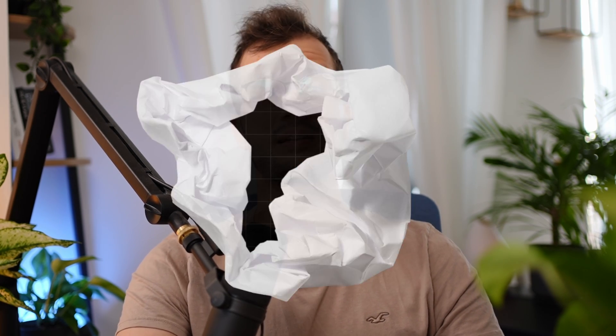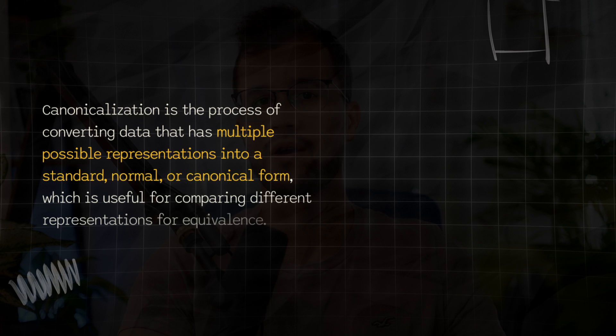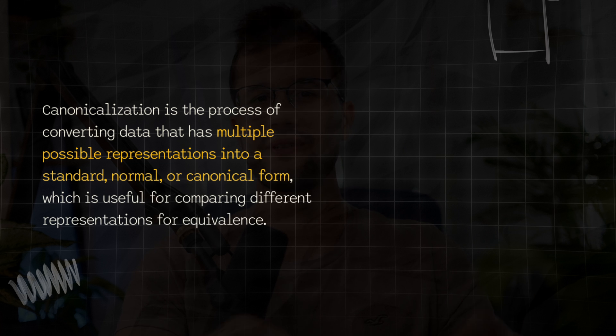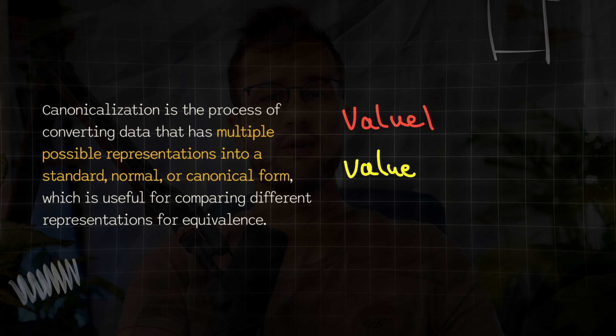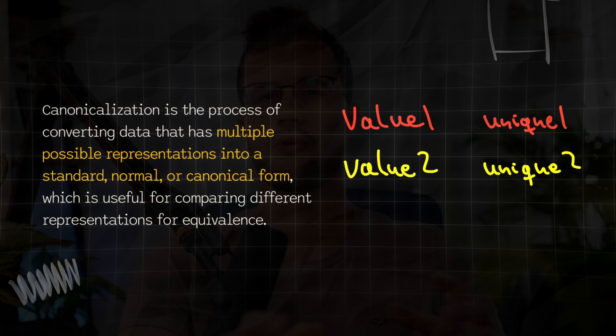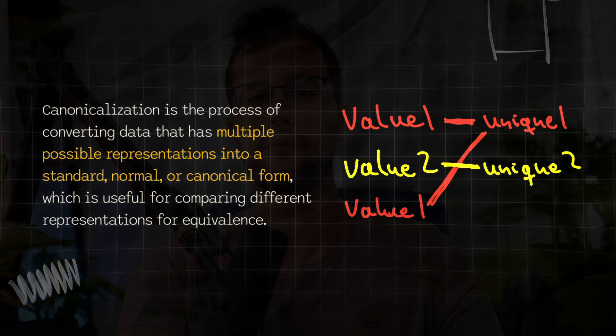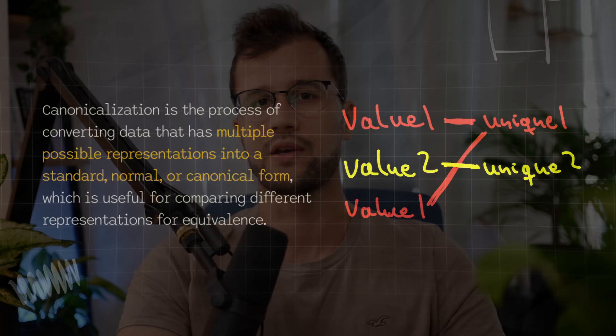Canonicalization is the term that refers to the process of creating unique representations of data that we want to compare. We use this concept to manage memory efficiently, but also to ensure that identical values are represented by the same object in memory. You will see what I mean in a minute.